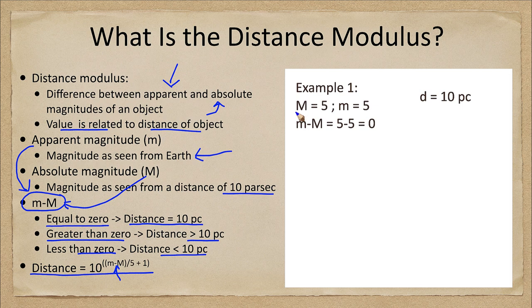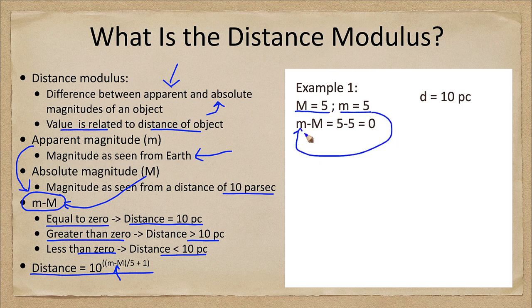Let's look at an example here. If we have a star that has an absolute magnitude of 5 and an apparent magnitude of 5, well we take this value here, that's the apparent magnitude, this is the absolute magnitude, so we take 5 minus 5 which gives us 0.